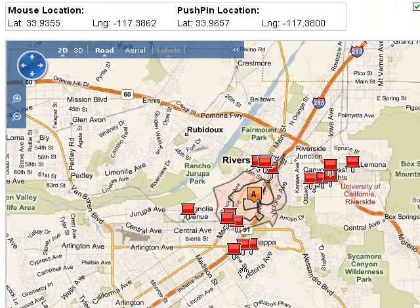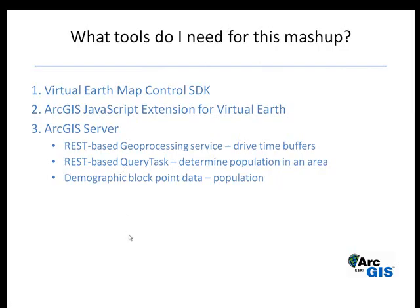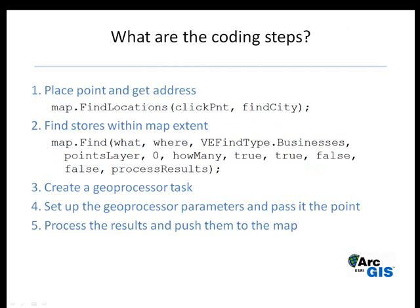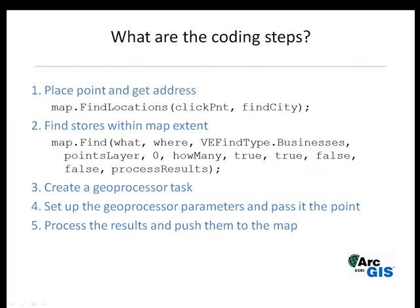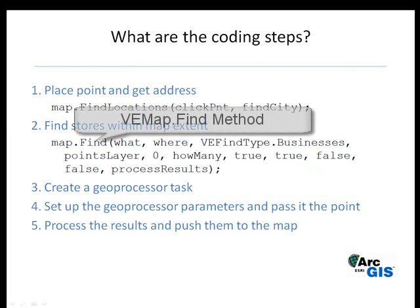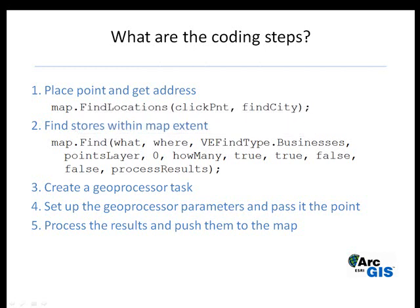Let's take a look at the steps. The first thing I did was place the point on the map and get the address — I passed the click information to the find locations method, which did our reverse geocoding and got us the address, city, and state. Then I took the city and state and passed it to the find method. This is the Microsoft Live Search that gets us the additional restaurants surrounding my point where I think I want to locate my restaurant.